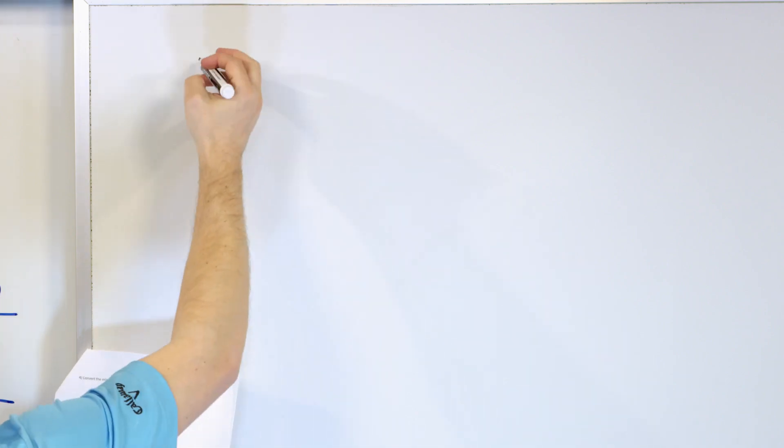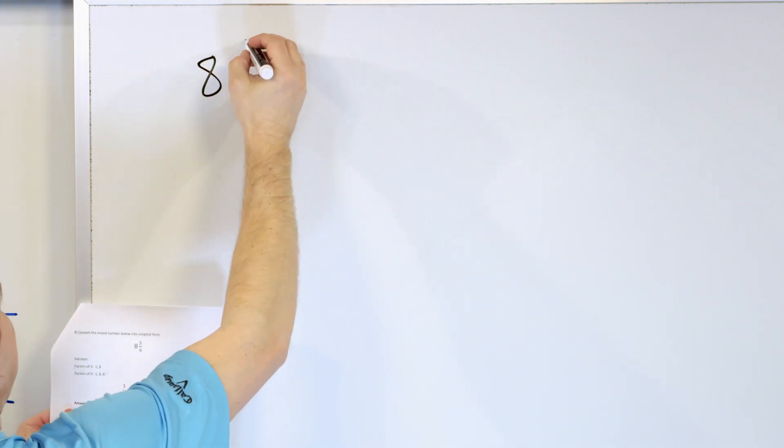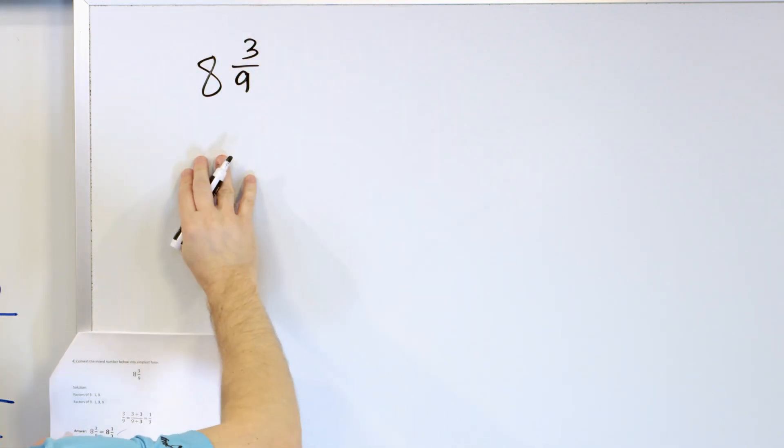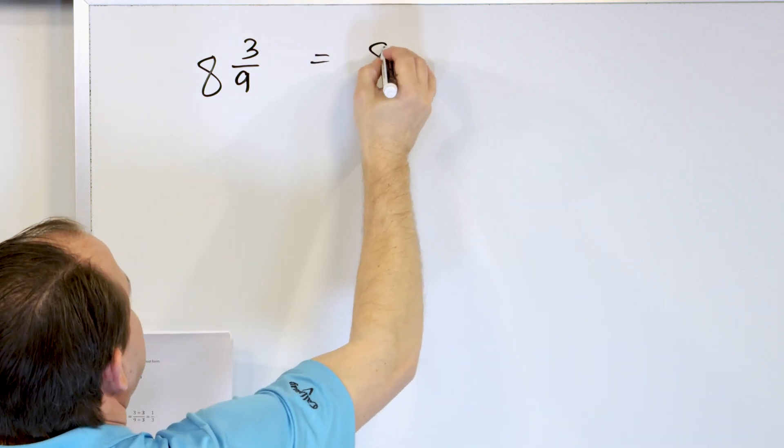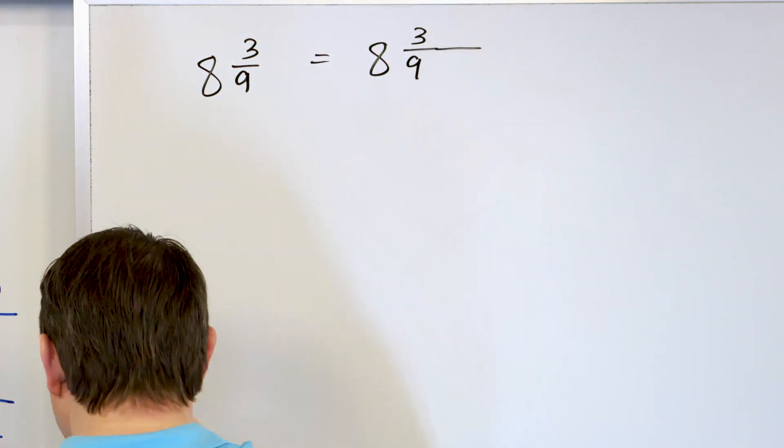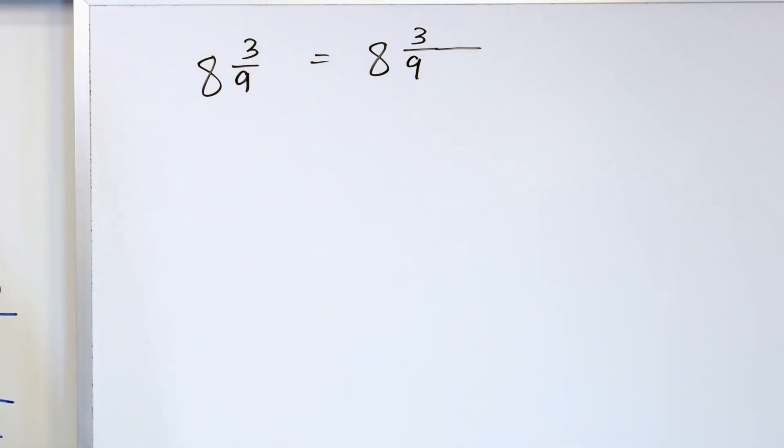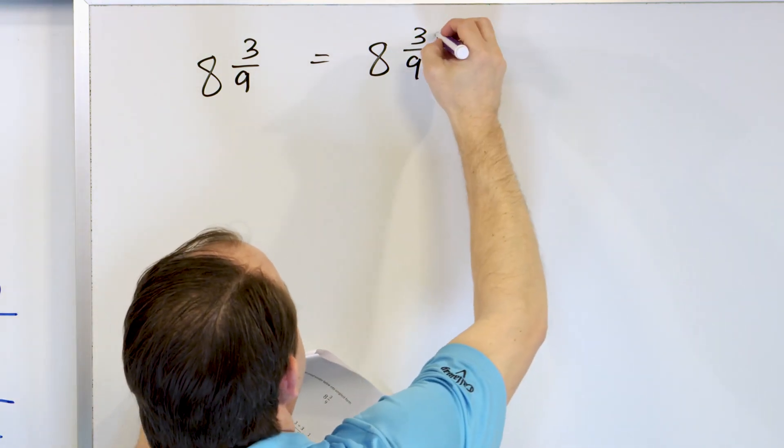Moving right along, let's take a look at the problem 8 and 3/9ths. So we have a whole number of 8, and then we have that 3/9ths. What do you think we're going to divide that 3 and the 9 by? Well, of course, both of these are divisible by 3.